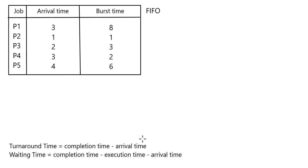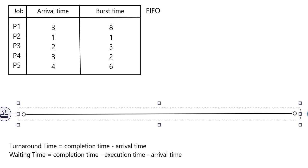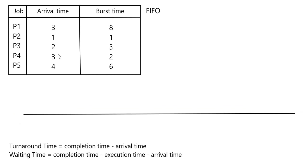For the second FIFO example, the formulas derived earlier are noted. Let's draw the Gantt chart — a horizontal straight line. In this example the arrival times are different. The first process arrives at time unit 3, while the second arrives at time unit 1. This is first in first out, so the process that arrives first gets the CPU and holds it until it completes execution. P2 arrives first at time 1.